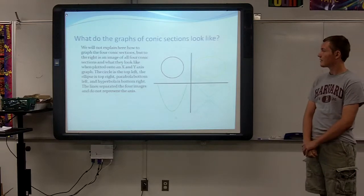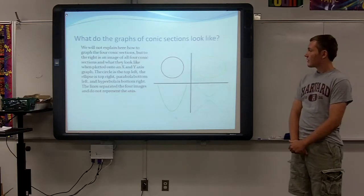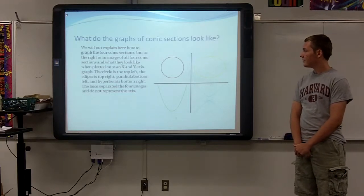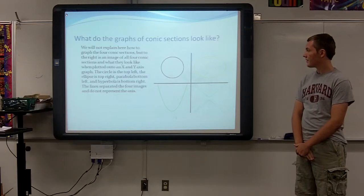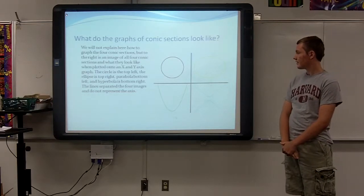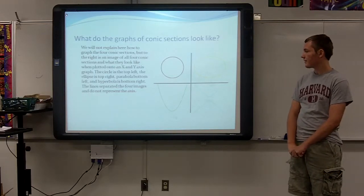What do the graphs of the conic sections look like? We will not explain here how to graph the four conic sections, but to the right is an image of all four conic sections and what they look like when plotted onto an x- and y-axis graph. The circle is top left, the ellipse is top right, parabola bottom left, and hyperbola is bottom right.